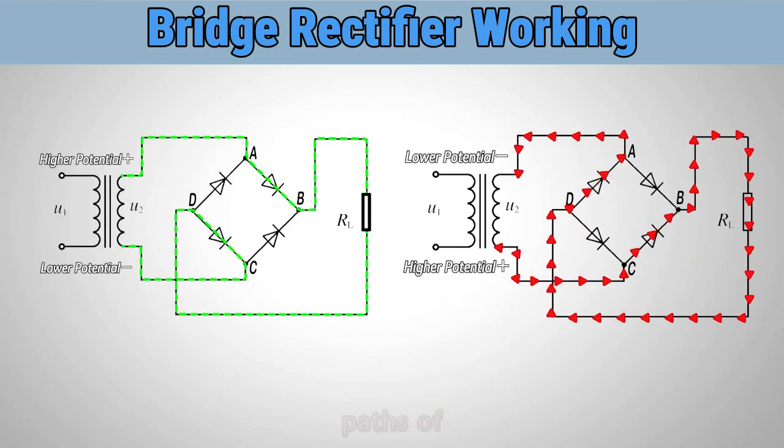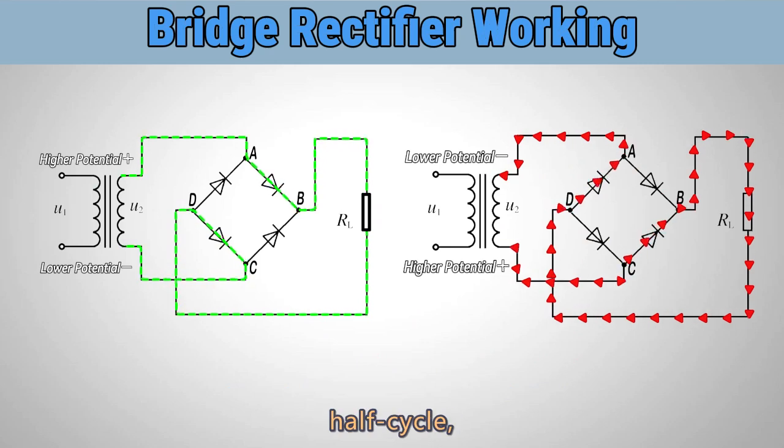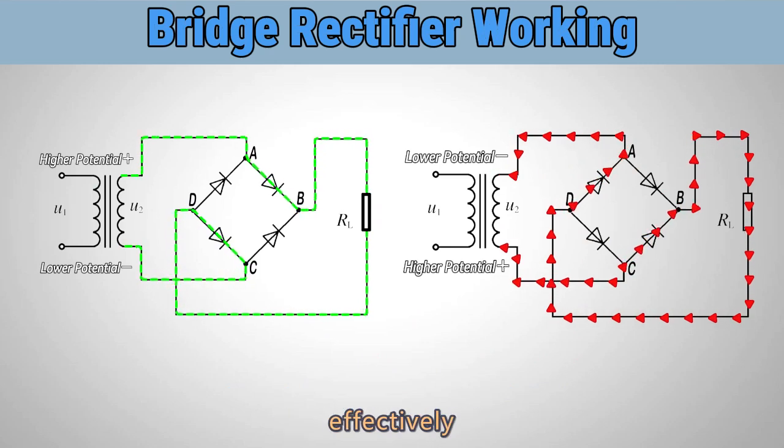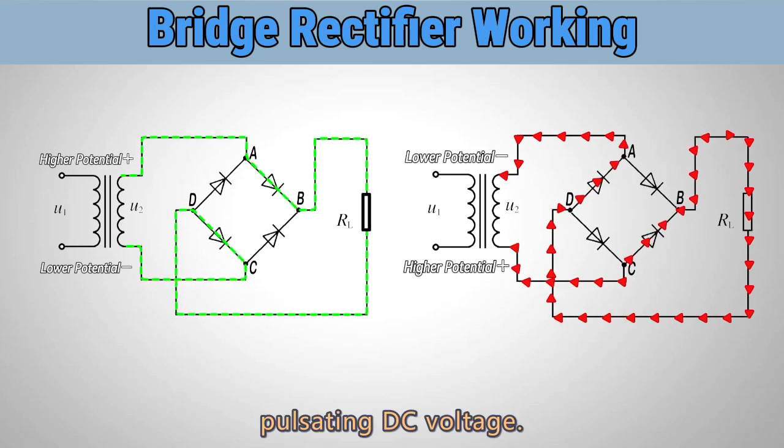By alternating the conduction paths of the diodes during each half cycle, the bridge rectifier effectively converts AC voltage into a pulsating DC voltage.